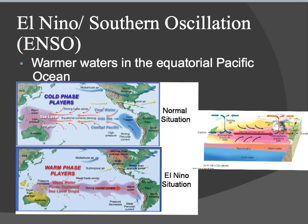El Niño, or the Southern Oscillation — together called ENSO — is the warming of waters in the equatorial Pacific Ocean. In normal conditions, we have strong trade winds blowing from the northeast to the southwest, or from the southeast to the northwest. That causes all this warm water to be pushed over into Australia and Indonesia. Warm water causes that air to get warm — air rises, cools, condenses — and we have storms over there.